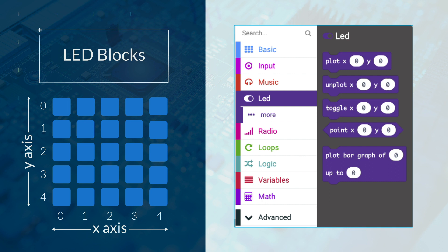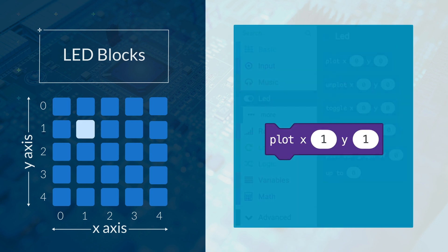The LED menu has the blocks to control the LEDs. The plot block will turn on the LED at position x, y.